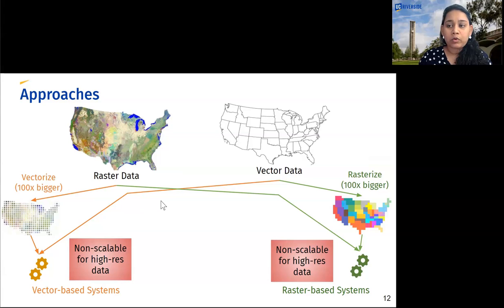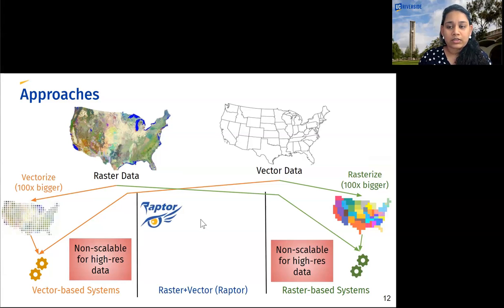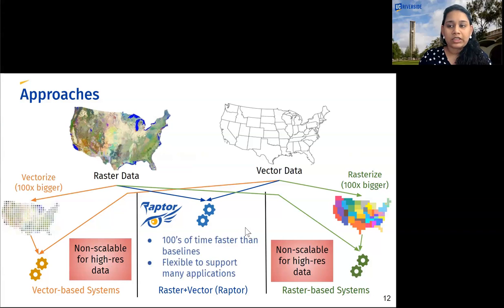However, the proposed approach, Raptor, takes as input the raster data and the vector data and performs the proposed Raptor join on them. The proposed approach does not need to convert data from one form to another but can work with datasets in their native formats. It is hundreds of times faster than existing approaches and is flexible enough to support various applications.